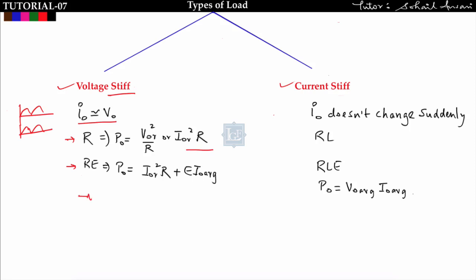For RE load, output power = I_rms² × R + E × I_naught_average, because E is DC so you must use average current for power across E, and RMS current for power across R. The second type is current stiff load: here i_naught doesn't change suddenly because an inductor is present, as in RL type loads.